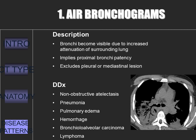Air bronchograms allow you to see the air-filled bronchi because the surrounding lung is of increased attenuation. An air bronchogram implies that the proximal bronchi are patent because you can see the air going through them. This sign was originally described to identify lung disease and distinguish it from pleural disease, and has now become another name for air-space consolidation. It may be seen in association with a variety of lung parenchymal abnormalities like atelectasis, lung consolidation, and interstitial thickening, to name a few.